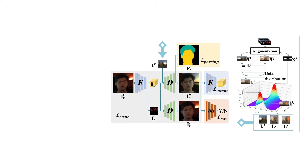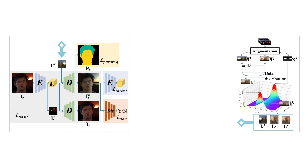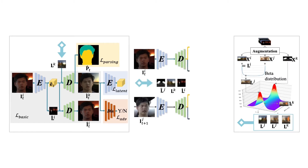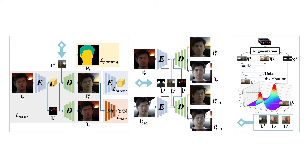Our network encodes the portrait structure information E and the lighting condition L in the bottleneck. When it comes to temporal modeling, two consecutive OLAT frames are fed into the same network respectively, and then we calculate the error of outputs under the target lighting and each other's lighting.